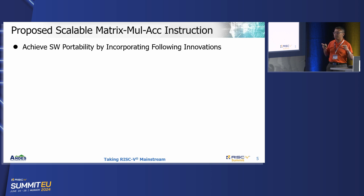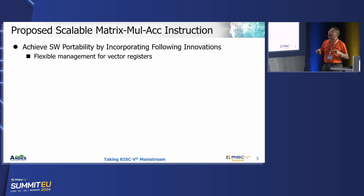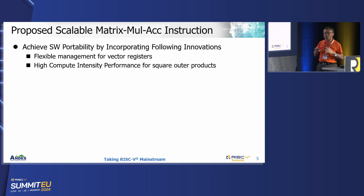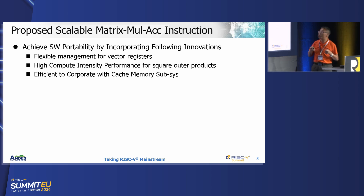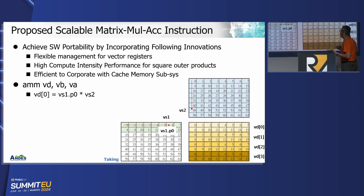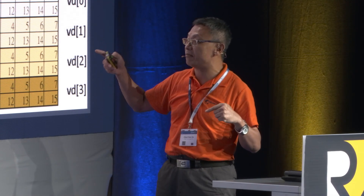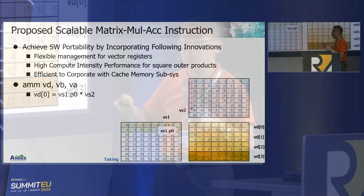The first topic we discuss is source scalability. We think that if we want to do matrix operations based on an integrated matrix extension, the architecture state should be flexibly managed and it should be very easy to form a high compute intensity square accumulation output. At the same time you should be able to co-work very easily with your cache system. As shown in this example, we can easily use a group of registers to form a square output, and the instruction set can specify which portion of matrix input generates which output.